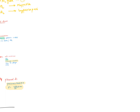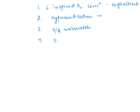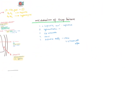Now let's discuss the mechanisms of respiratory failure. First is decreased inspired oxygen concentration — for example, at high altitude. Second is hypoventilation, as in type 2 respiratory failure. Third is VQ mismatch. Fourth is shunting — collapse of alveoli. Fifth is diffusion abnormality — for example, all causes of decreased DLCO, such as COPD and emphysema.